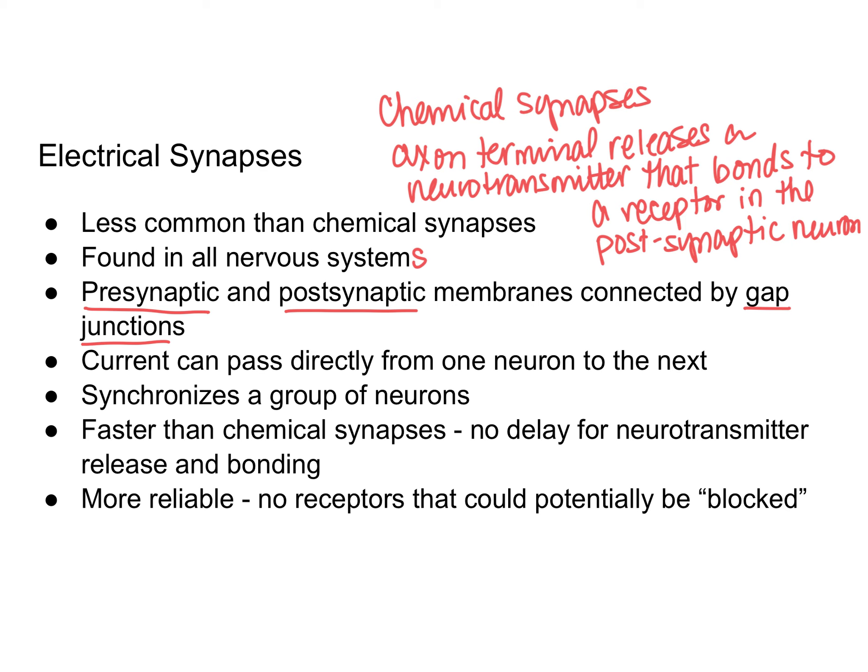One benefit of electrical synapses is that they're faster than chemical synapses. With chemical synapses, there is a delay between the release of the neurotransmitter, its binding to a receptor, and the opening of a channel to allow ions to cross the membrane. With electrical synapses, depolarization moves directly into the next neuron. Electrical synapses are also more reliable — they're less likely to get blocked by chemicals, drugs, medications, or toxins in the environment.